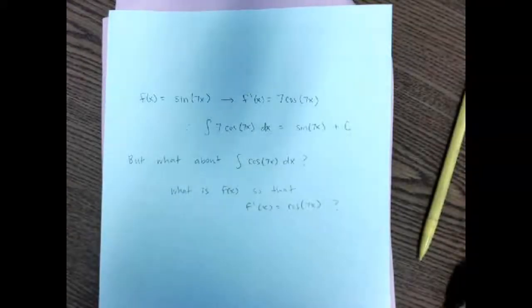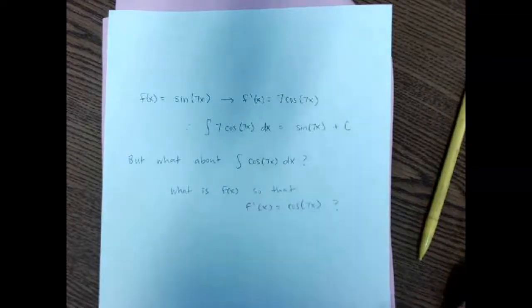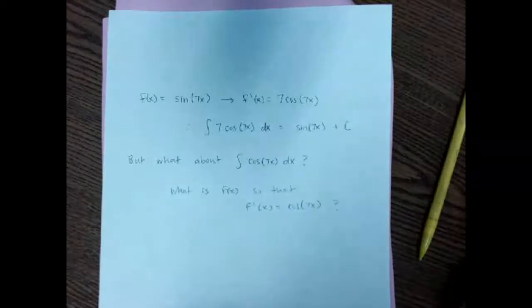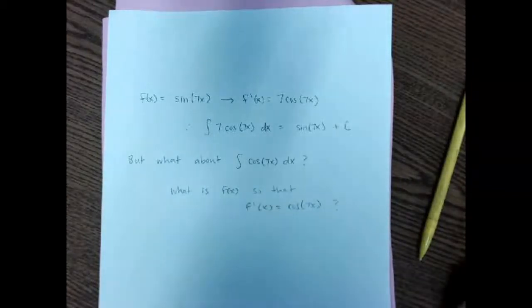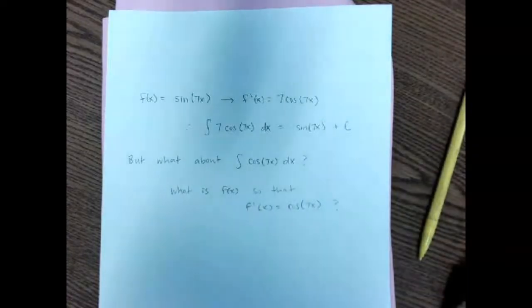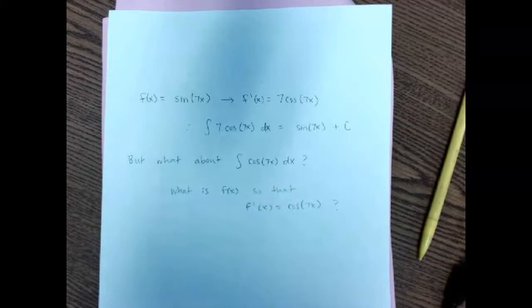In this video we are going to tackle the fairly complicated subject of U-substitution. It's actually how we reverse chain rule derivatives — how we undo derivatives for a composite function. It's going to be a little bit tricky at first, but these questions are all very repetitive, so hopefully the more that you do them, the easier they will get.